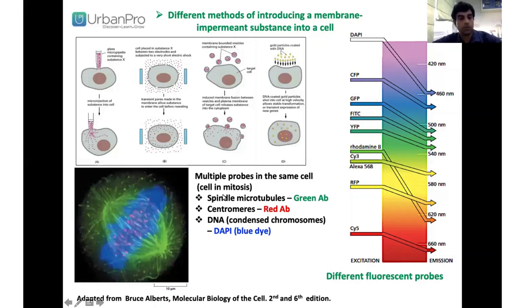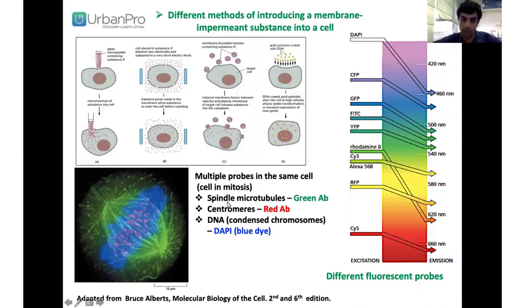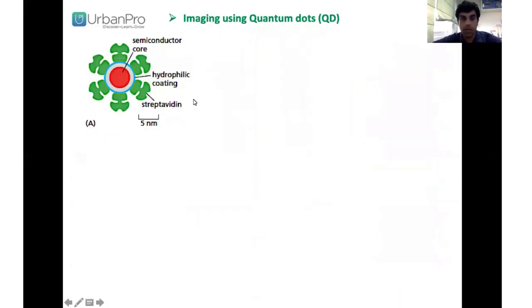You can also use multiple probes in the same cell. For example, in a cell in mitosis, the spindle microtubules are labelled with one antibody, centromeres are labelled with a second antibody, and the DNA is labelled with a fluorescent dye.